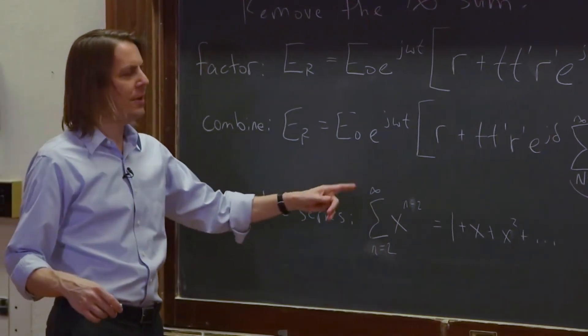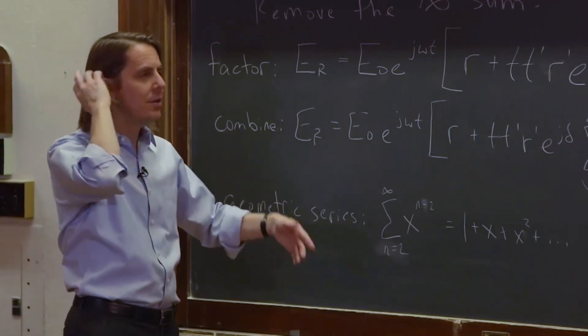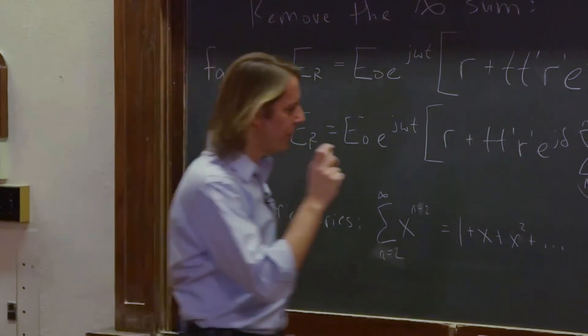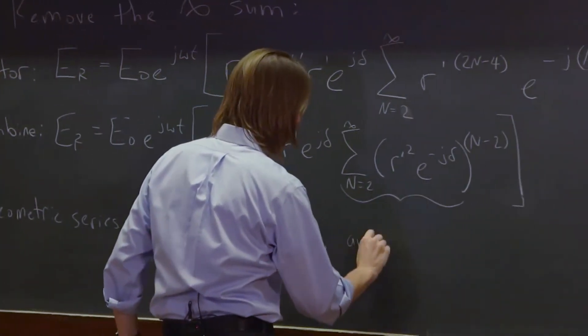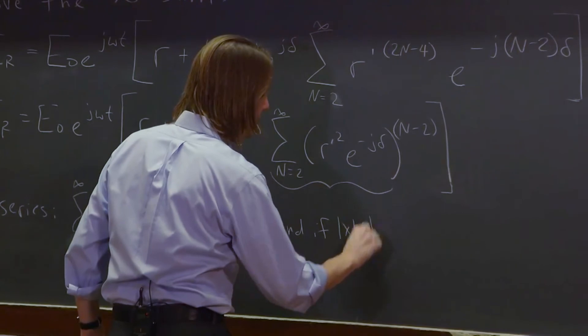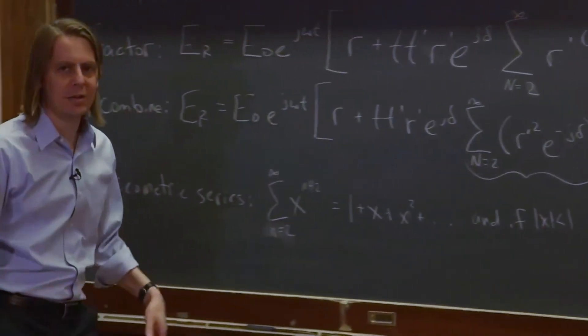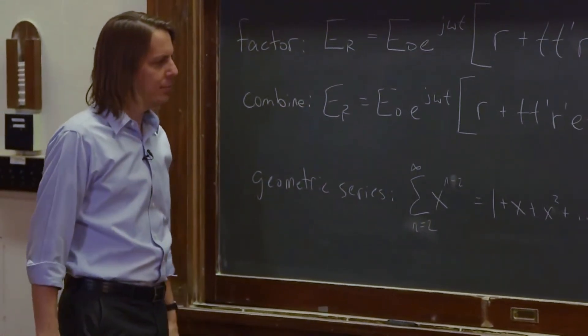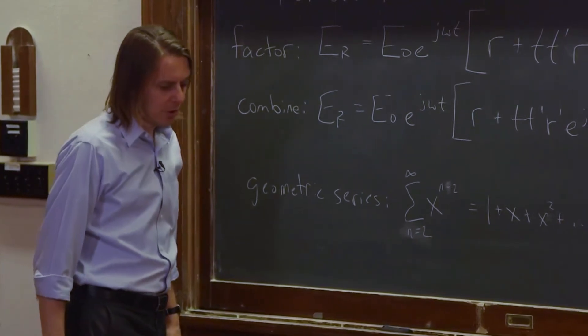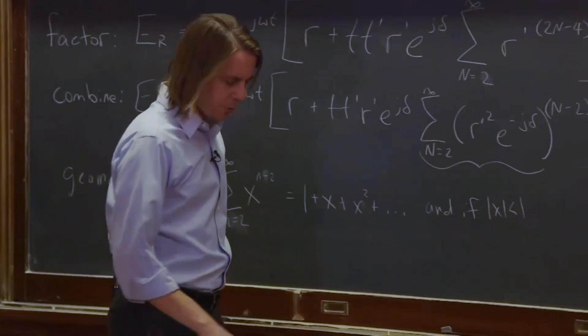If you see it real general, it doesn't even go to infinity. But if you assume it goes to infinity, you can write it this way. And there's another thing you have to assume. And if the magnitude of X is less than 1, positive or negative, if the absolute value of X is less than 1, then it converges to 1 over 1 minus X.